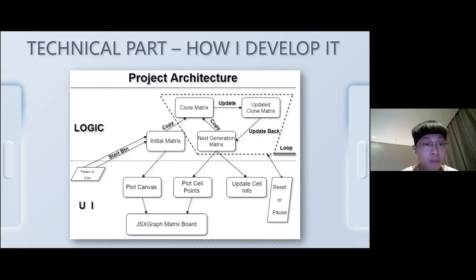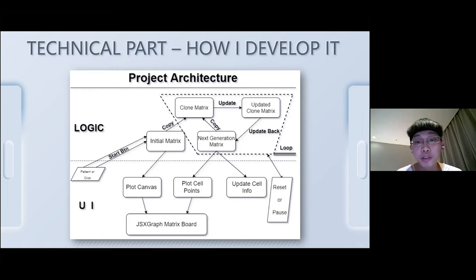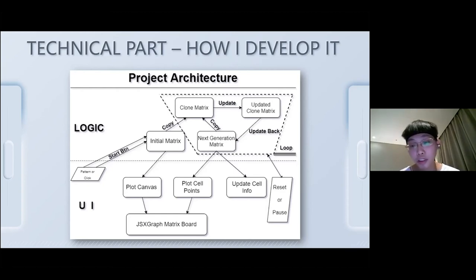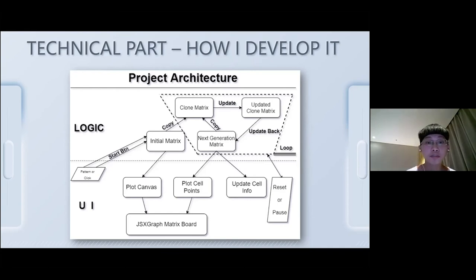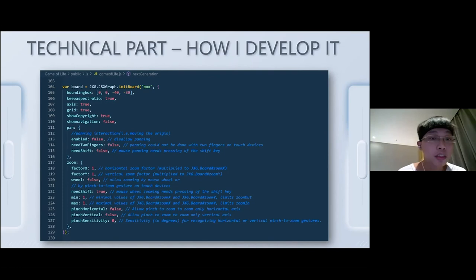For the UI part, we plot the initial matrix when it is generated to the JSXGraph board. We also plot the next generation matrix when it is generated, and update the statistic information such as cell count, evolution count, and so on. The user can also trigger reset and pause events during the loop. Now let's dig into the specific JSXGraph code used in this project.